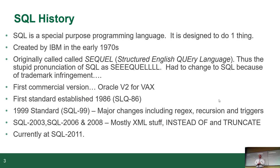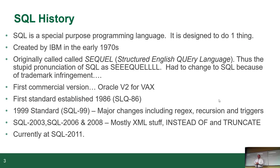The standards body would say you must have these features, and then everybody would do their own thing for another ten years. There were standards in 2003, 2006, 2008 — they kept adding stuff nobody uses. In 2008 they finally brought in the standard for TRUNCATE, which everybody already had. In 2003 they added XML, and almost nobody's using XML anymore — everybody's moved to JSON.